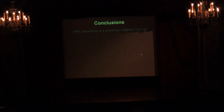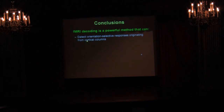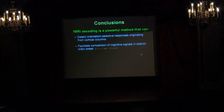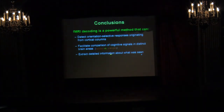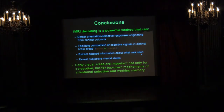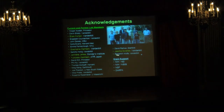To conclude: fMRI decoding is a powerful method that can detect orientation-selective responses originating from cortical columns due to their bandpass nature. In some cases it can facilitate comparison of cognitive signals in distinct brain areas — almost comparing apples and oranges. Studies from our lab and those of Jack Gallant and Yuki Kamatani show you can extract detailed information about what was seen — brain reading. Perhaps even more interesting is that we can probe cognitive states and higher-level functions, providing new evidence for the importance of early visual areas not just for perception, but for top-down mechanisms of attentional selection and working memory.